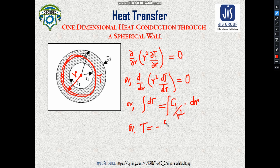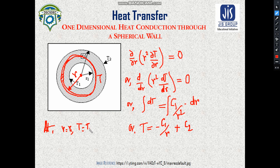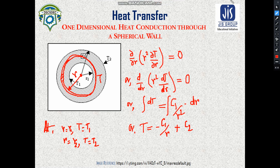Integrating both sides gives T = −C1/r + C2, where C2 is the second integration constant. Now we apply boundary conditions: at r = r1, T = T1, and at r = r2, T = T2. We need to solve these two simultaneous equations to find the values of the two constants C1 and C2.